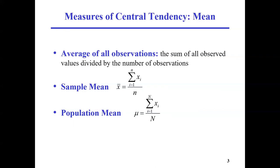You cannot survey all one million people, so you have to draw some samples. We can define a sample as a group of observations drawn from the population. Here, the population of this statistical research is the whole population of the city — one million people. When you draw 1,000 people from this population, that 1,000 people is the sample.